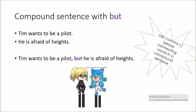Compound sentences with but. Enunciados compuestos con la palabra but. Here I show you two different sentences: Timmy wants to be a pilot. He is afraid of heights. If we want to make them into a single sentence, entonces debemos utilizar el conector but: Timmy wants to be a pilot, but he is afraid of heights. La palabra and es para continuar algo. La palabra but es un pero que se le pone al enunciado. Timmy quiere ser piloto, pero le teme a las alturas.